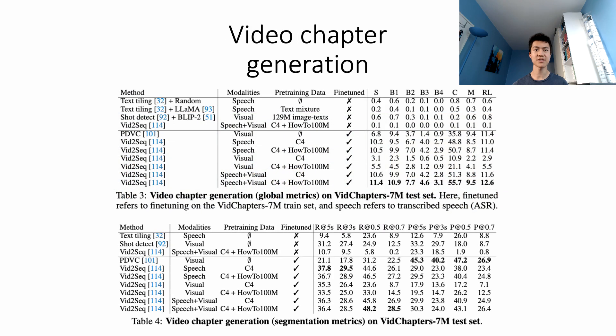On the video chapter generation task, models trained on vidChapters7million outperform zero-shot baselines, demonstrating the effectiveness of training on vidChapters7million. In particular, PDVC has the best precision, and vid2sec achieves the best results in terms of overall generation and recall.